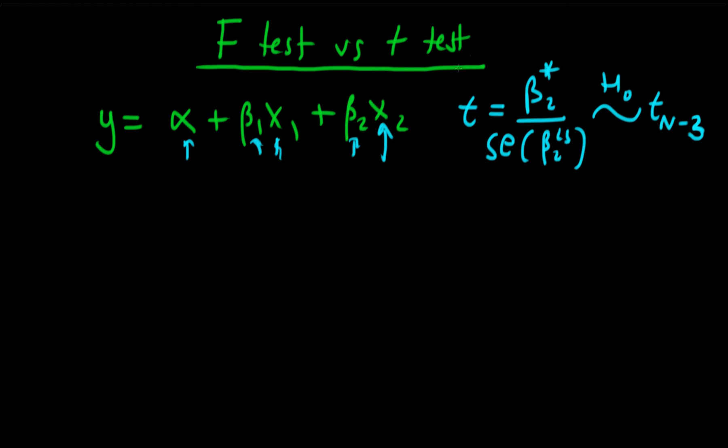The idea here is that we look up in a T-table the critical value for this particular distribution, then we would compare our T-statistic with that critical value. If it was greater than that critical value, then we would reject the null hypothesis, which in this case is that beta 2 equals 0 in the population.